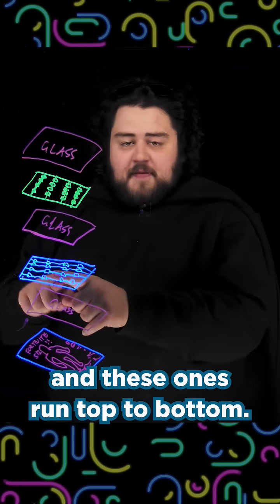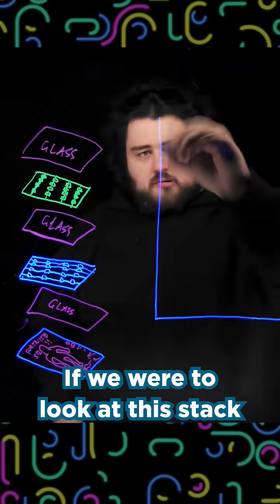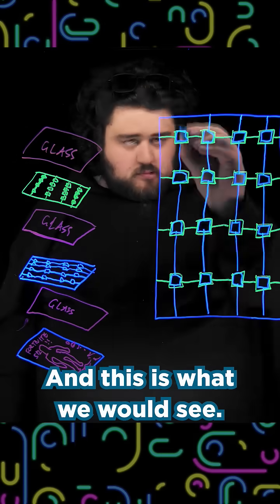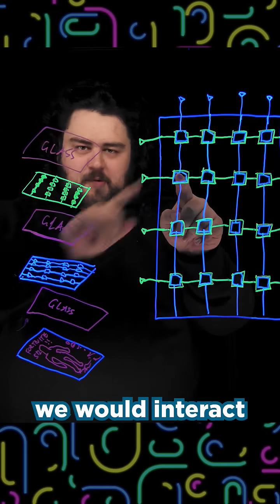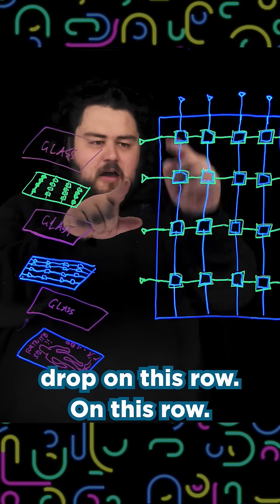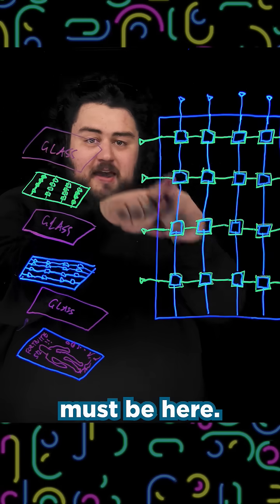These ones run side to side, and these ones run top to bottom. If we were to look at this stack directly from above, those plates would line up, and this is what we would see. And if I put my finger here, we would interact with those magnetic fields and cause a voltage drop on this row, on this row, and our phone would know that our finger must be here.